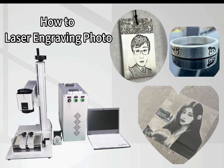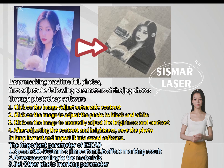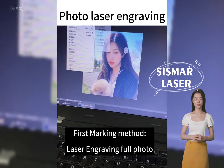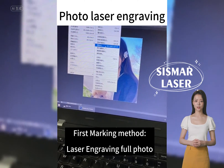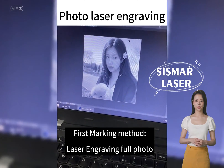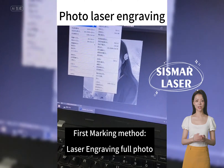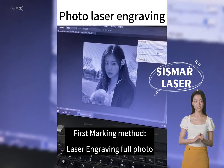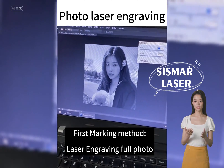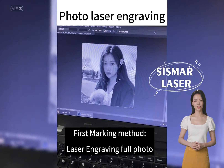How to laser engrave photos using a laser marking machine. First, adjust the JPG photo parameters through Photoshop: click Image > Adjust > Auto Contrast, then click Image > Adjust to convert the photo to black and white. Next, manually adjust the brightness and contrast, and after adjusting, save the photo in BMP format.